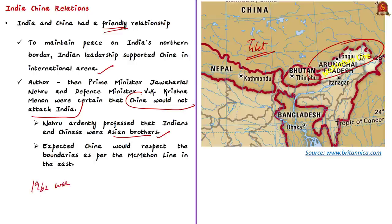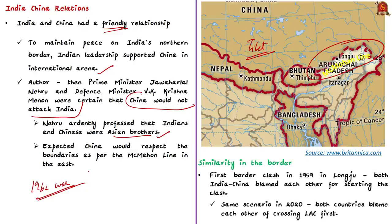This expectation proved disastrous, resulting in the India-China war in which India was badly defeated. Now, the current border dispute in 2020 is the same as it was in the 1950s and 60s. The first similarity is the border clash of 1959 in Longju, located in Arunachal Pradesh south of the McMahon Line. Both India and China blamed each other for starting the clash, and the same scenario is happening now — both countries blaming each other for crossing the LAC and firing first shots.